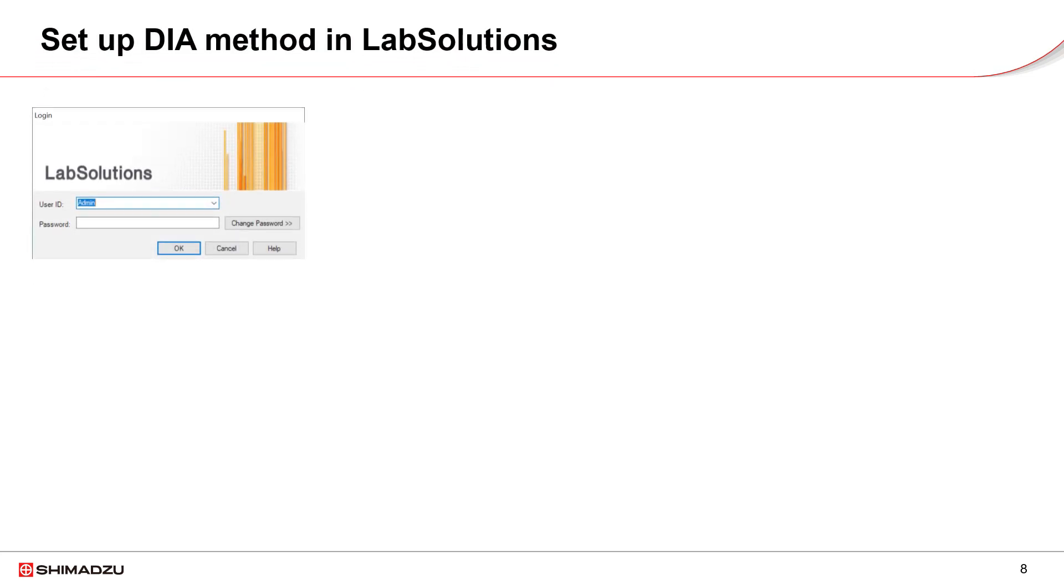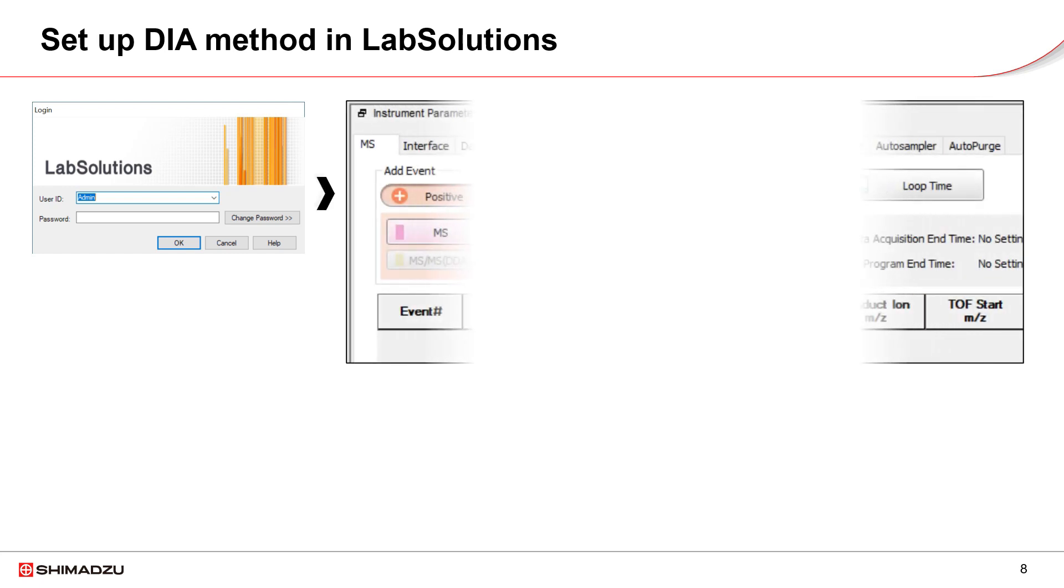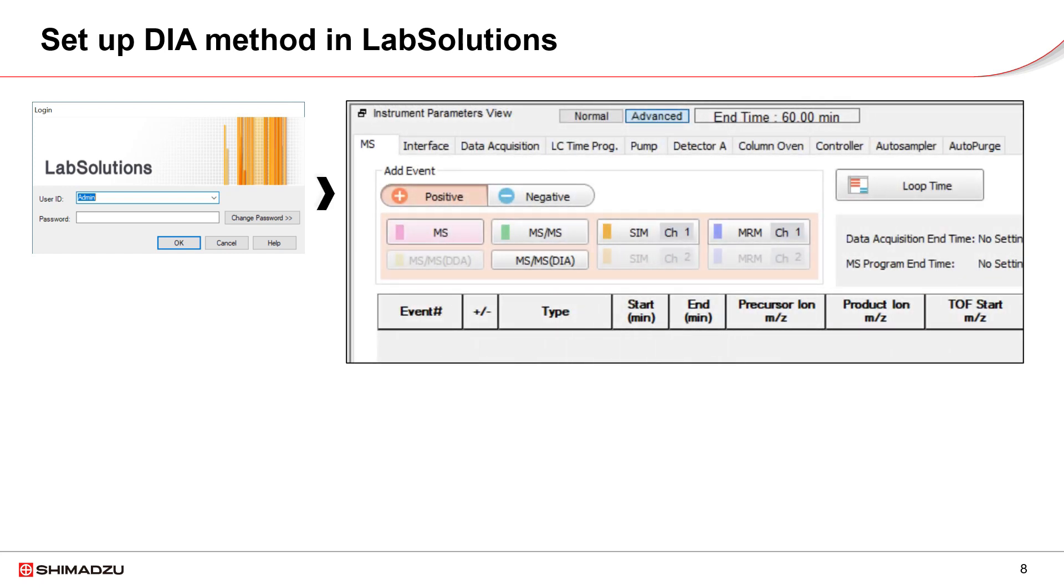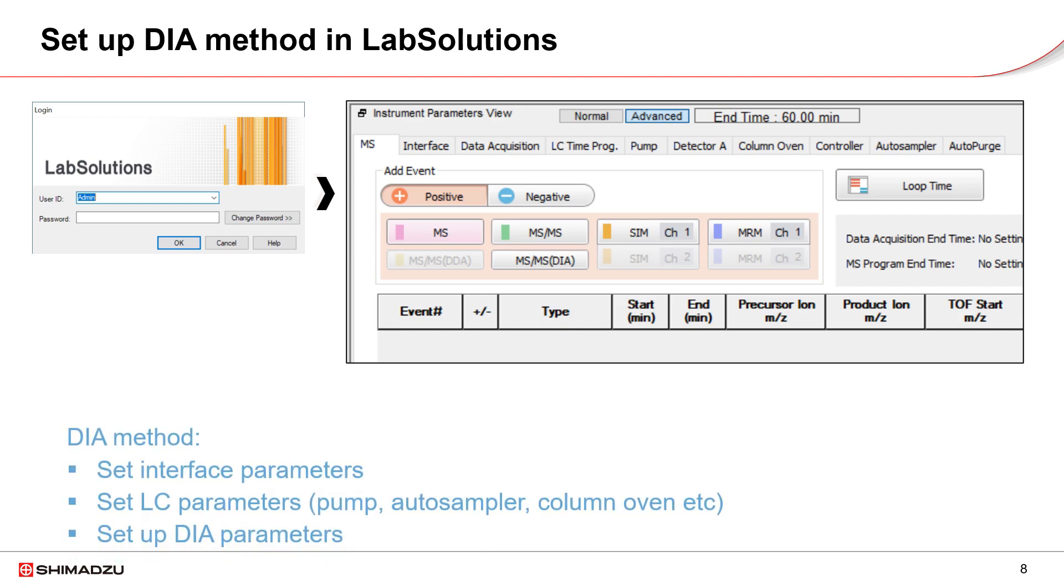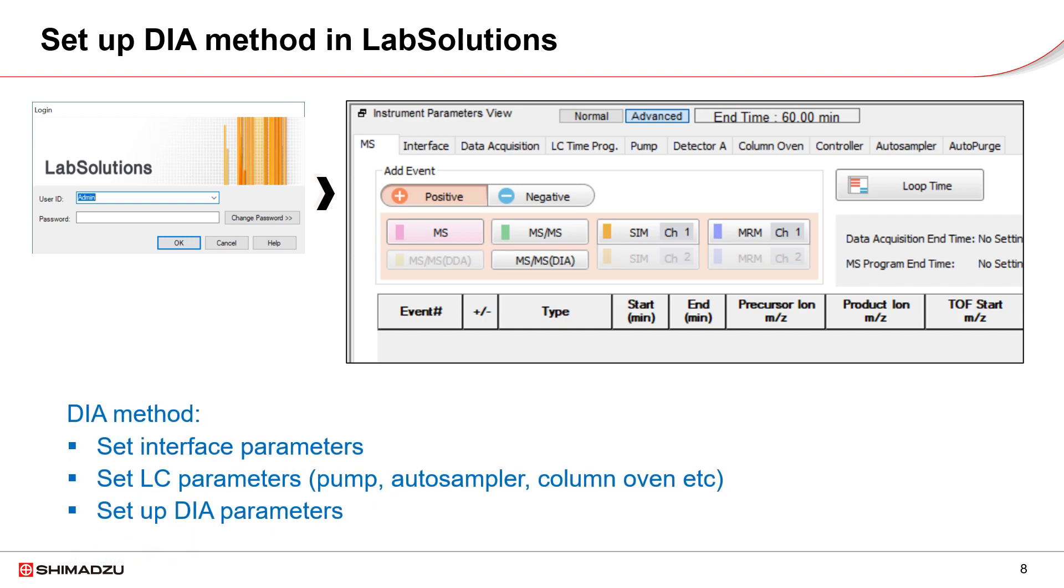Now, let's set up DIA method on the LC-MS-9050. Start the LabSolutions workstation. We first set up the interface parameters and all LC parameters. Then, focus on the DIA method setting up.